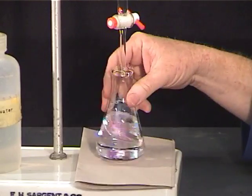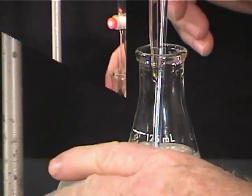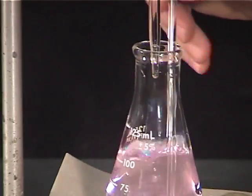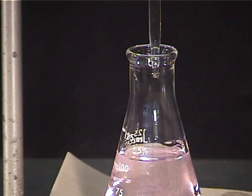At the very end of the titration, you can add a split drop by touching a hanging drop of titrant on the nozzle to a stirring rod, then stirring it into the solution.